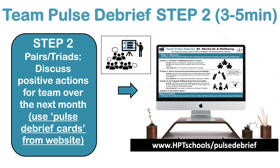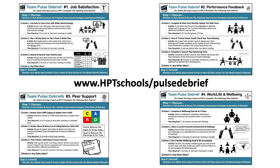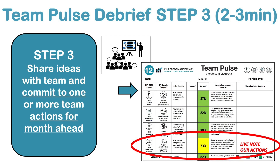In step two, we click on the prompt strategies on the website and have a pairs or triads discussion. Here are three example things we could do as a team to improve work-life and well-being. Depending on which of the four factors is the priority, there's a prompt card for each one — check that out on the website. Then in the final step of the debrief, we commit to at least one positive action in the month ahead as a team to improve — in this example — our work-life and well-being.